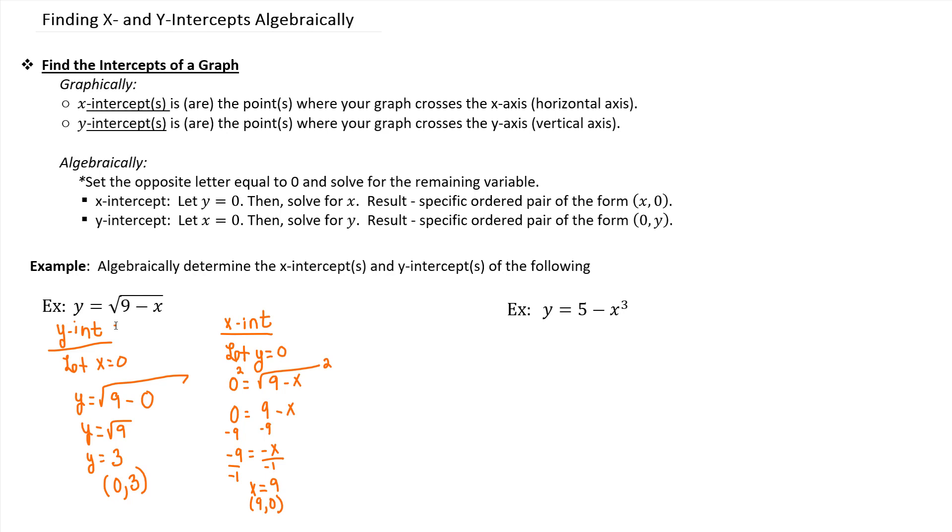In this case, the graph has one y-intercept and one x-intercept. Let's go ahead and take a look at another example. So we want to find the x and y intercepts for y equals 5 minus x cubed.